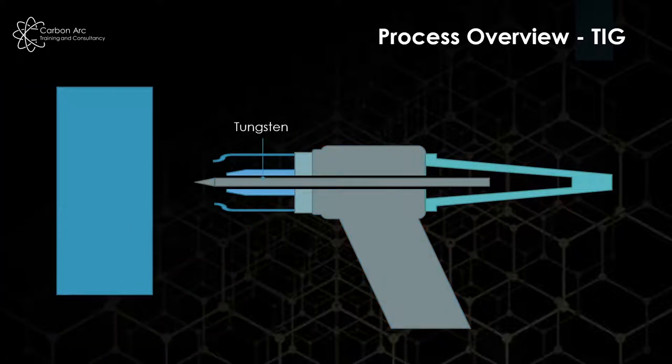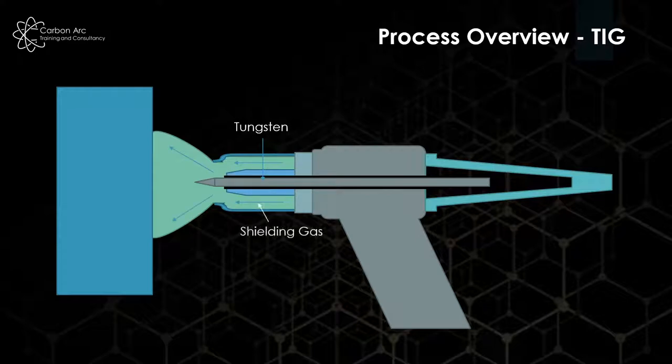In the process, the tungsten produces an arc within a shielding gas, normally argon, but it can be mixed with other items to increase the ionizing potential, like argon helium for example. We'll produce a welding arc from the tip of the tungsten across to form the weld pool.